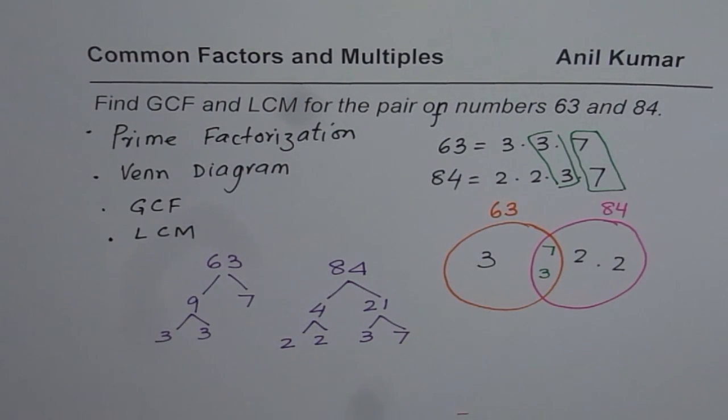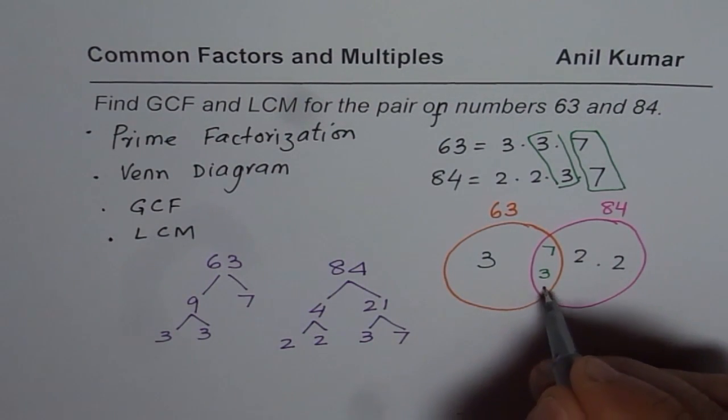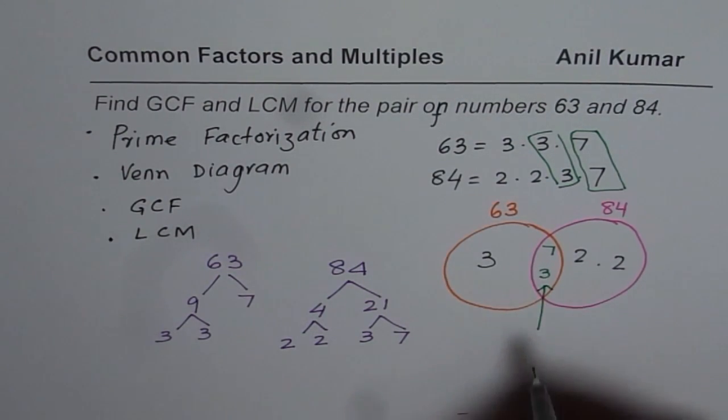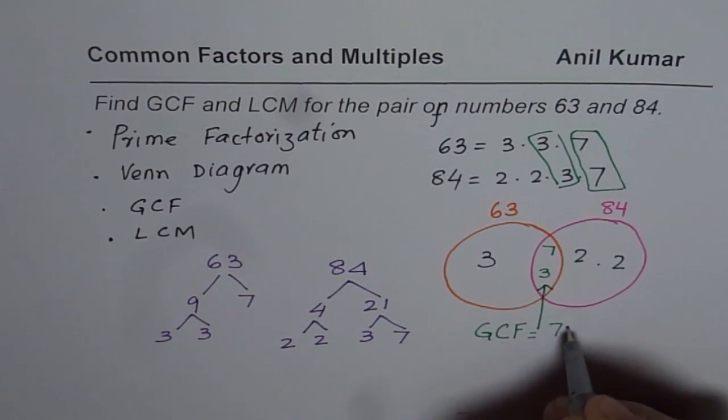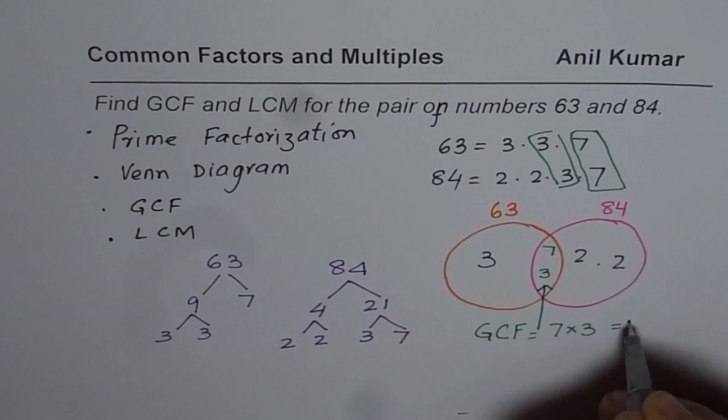The numbers in the center which are common, when you multiply them, we get greatest common factor and that is 7 times 3 and that is 21.